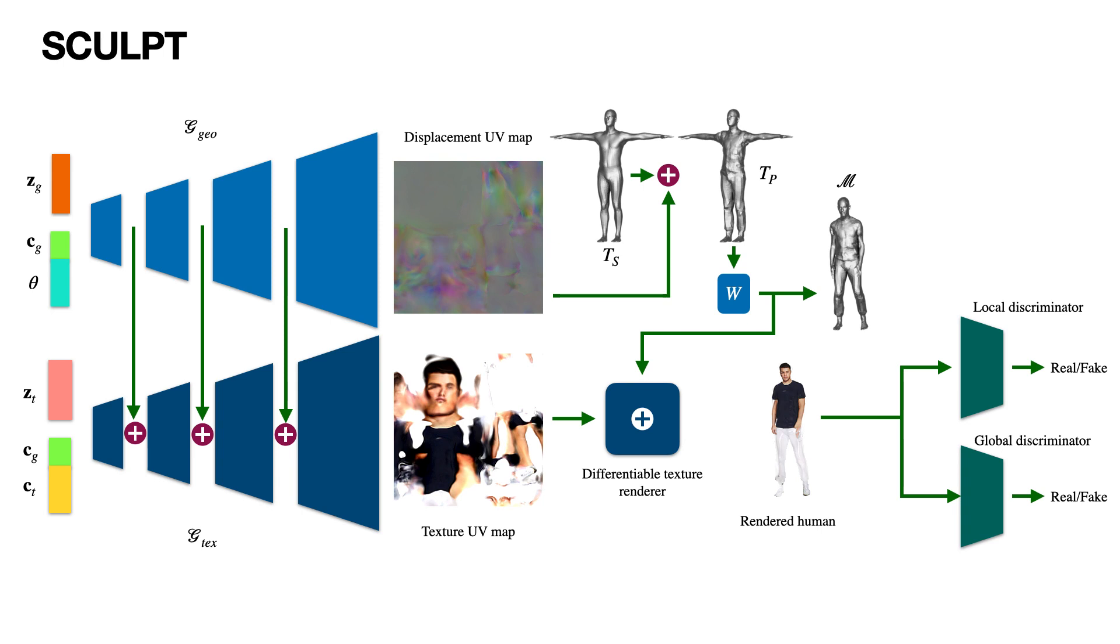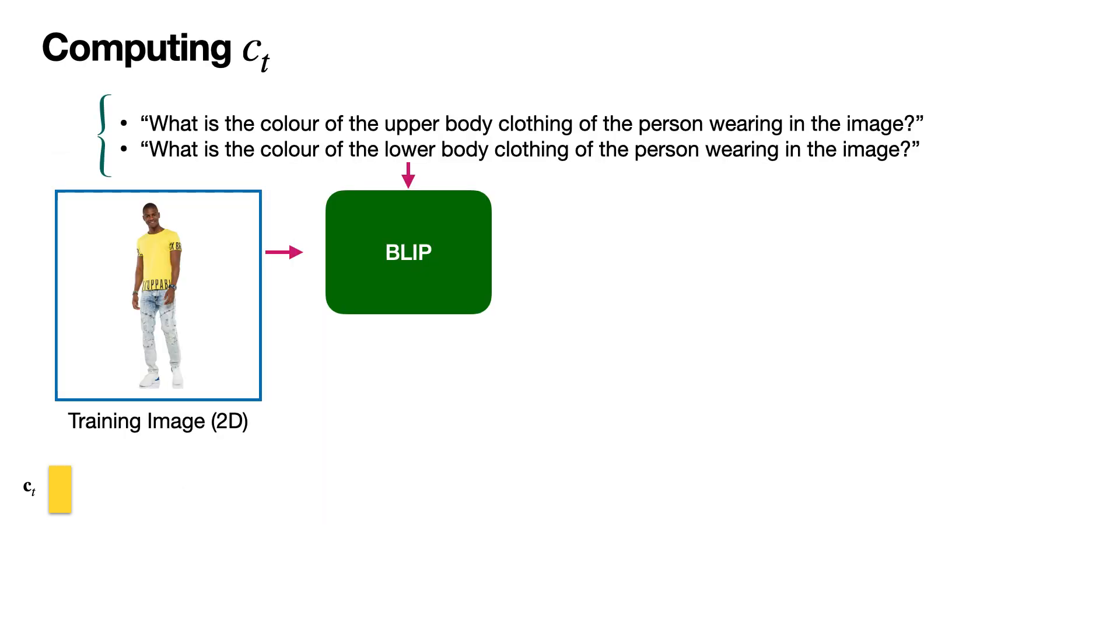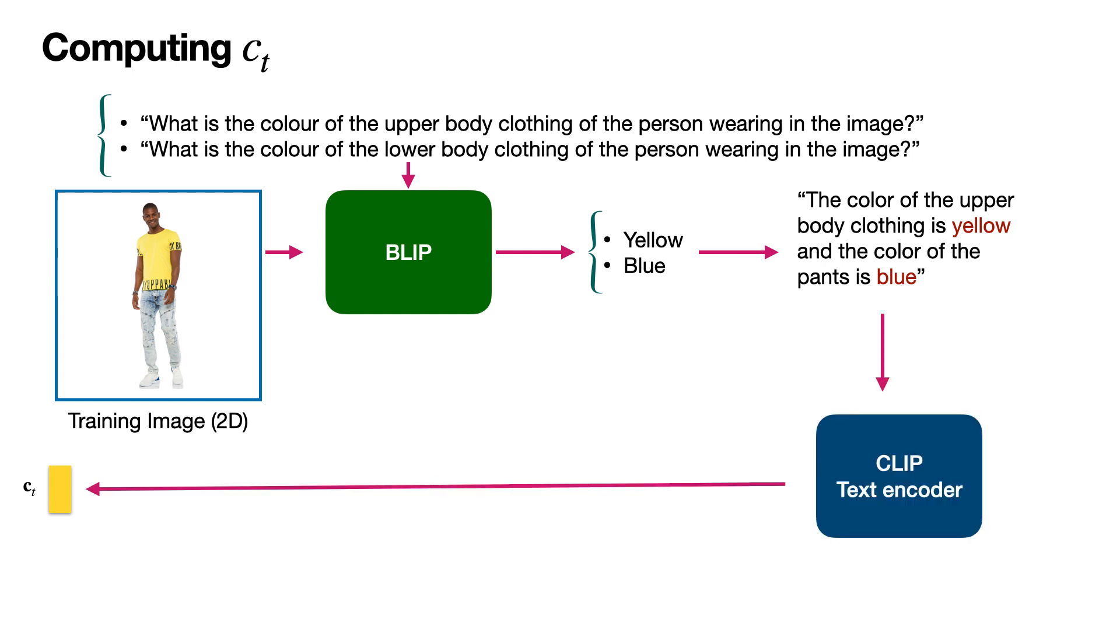Now we describe the computation of the clothing color labels. To achieve this task, we provide a fashion image and the two following questions as input to the visual question answering model BLIP, one by one. The output of BLIP is formed into a sentence. This is then passed to CLIP text encoder to get a feature vector which is used as CT. During inference, the BLIP model is replaced by user-made color inputs to form the sentence.